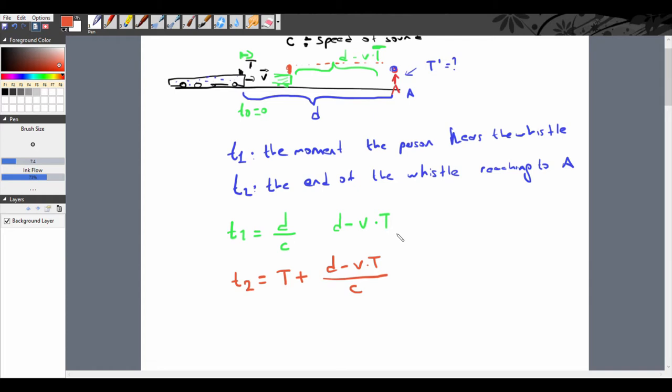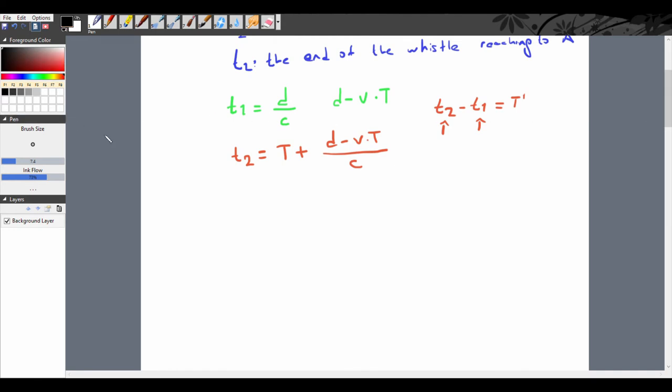To calculate the duration for the person, we subtract t1 from t2. That will give us T prime. Let us calculate. T plus d minus vT over c, minus d over c, which gives us T times c minus v over c. It is a very beautiful question.